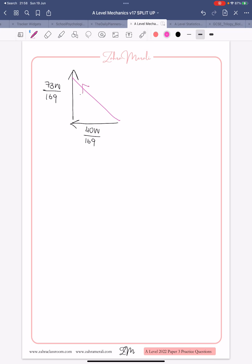So, we can do that using Pythagoras, and that's going to be our force at A. So, we're going to do the square root of 40 over 169, and that's going to be W squared, and that's going to be square that, and 73 over 169, W squared. When I stick that into my calculator, I get root 41 over 13W.